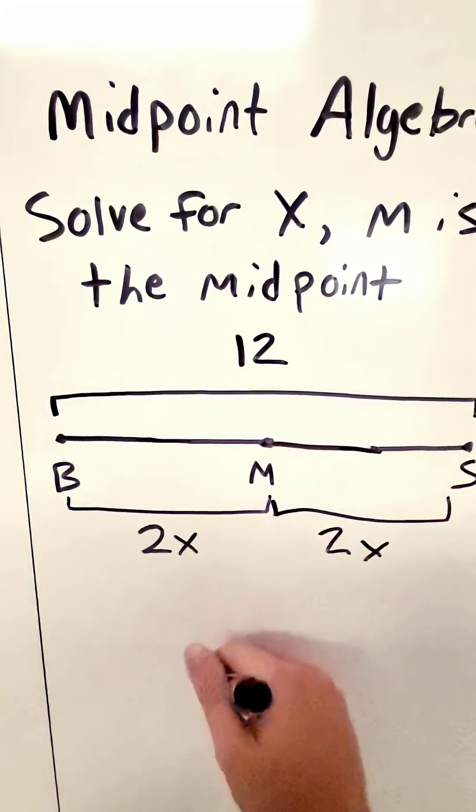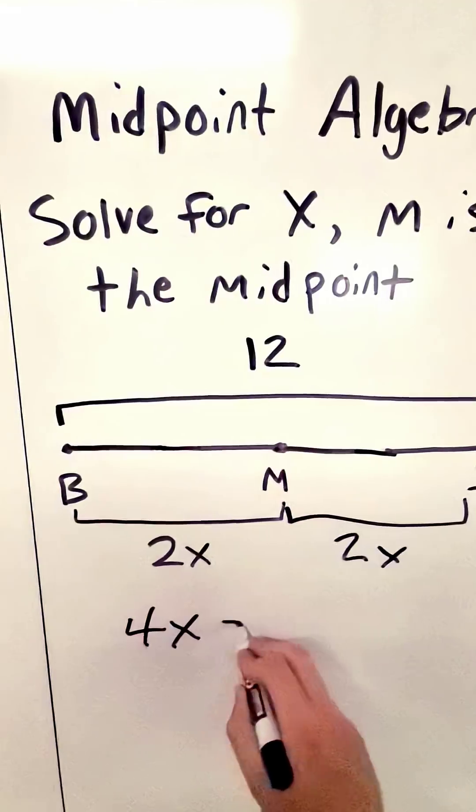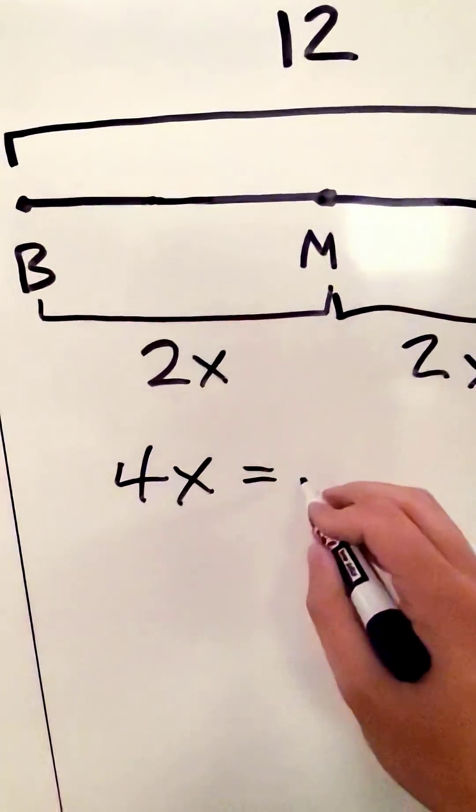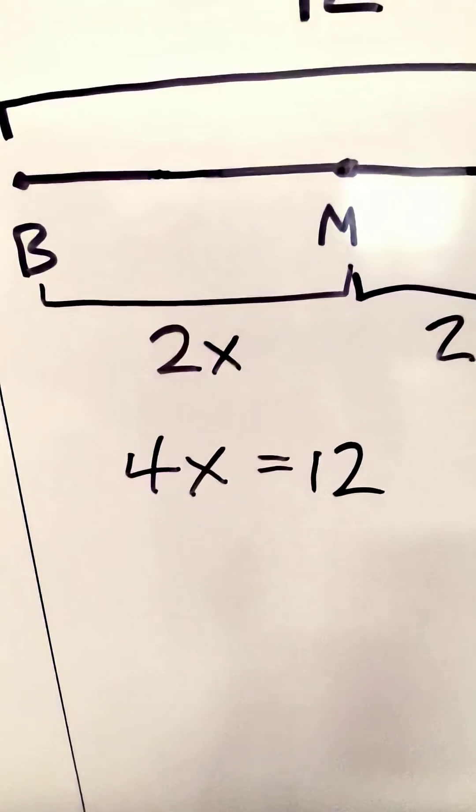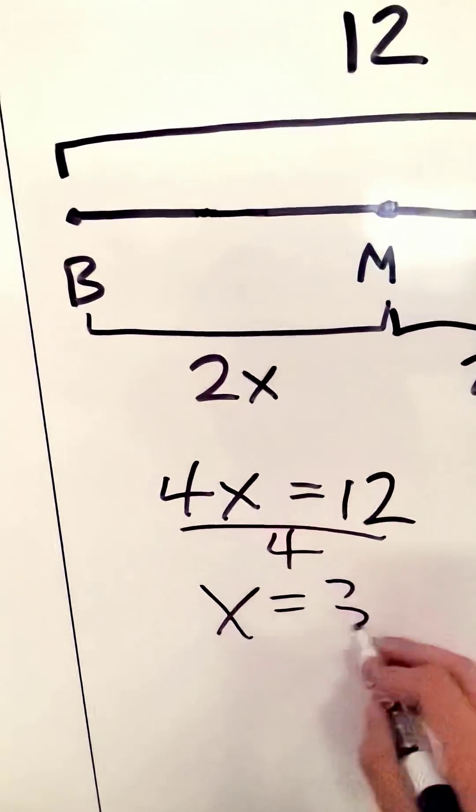The sum of the parts is equal to the whole, so we can add up 2x and 2x to get 4x, and that is equal to 12. Now to solve this equation, divide both sides by 4, and you get x is 3.